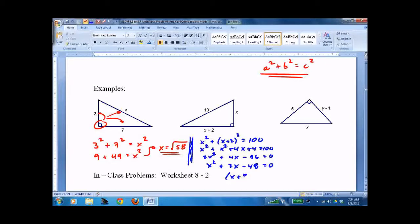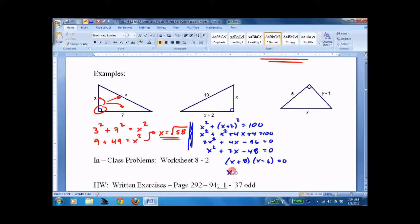X squared plus 2X minus 48 equals 0. X plus 8. X minus 6. Now we get X equals negative 8. X equals 6. Toss that out because it's negative. I'd get 6. 6 plus 2 is 8. 6, 8, 10. Which we call a triple, but you don't know that yet. You will soon.